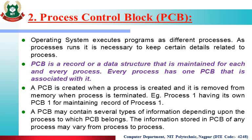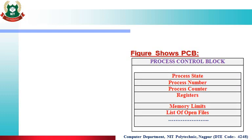A PCB may contain several types of information depending upon the process to which the PCB belongs. The information stored in a PCB may vary from process to process. The following figure shows the PCB — the Process Control Block may store process-related information. These are the different contents: process state, process number, process counter, registers, memory limits, list of open files, and more. First one is Process Number: it is necessary for the operating system to assign a number to each and every process for maintaining its record.